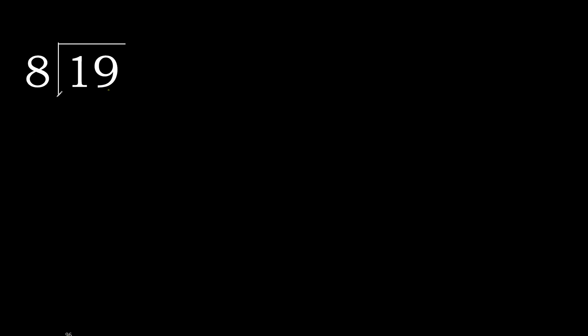19 divided by 8. 1 is less, therefore next. 19 is not less, therefore we work with 19. We find which number, when multiplied by 8, is nearest to 19 but not greater.